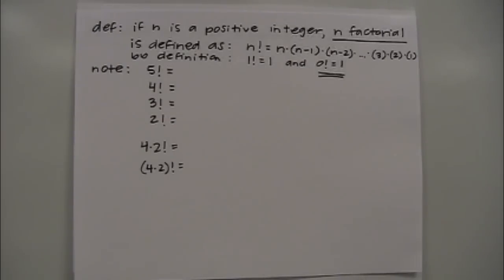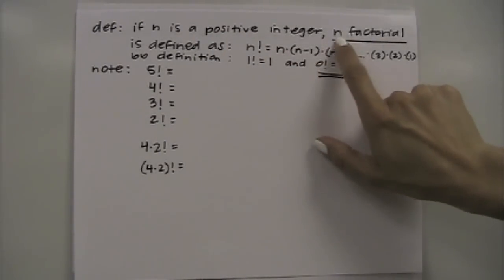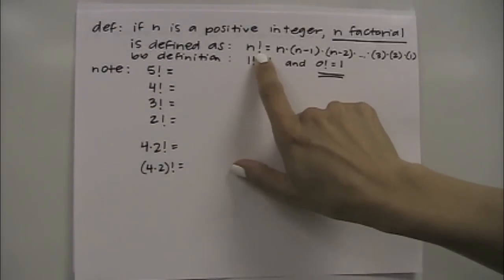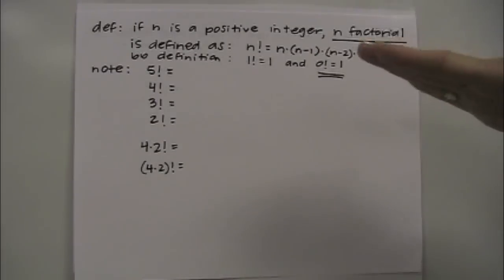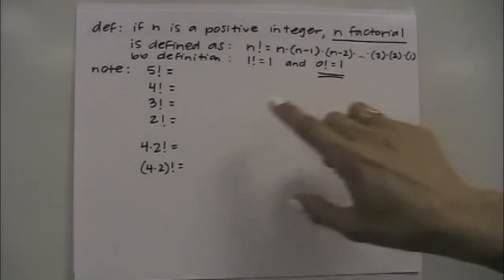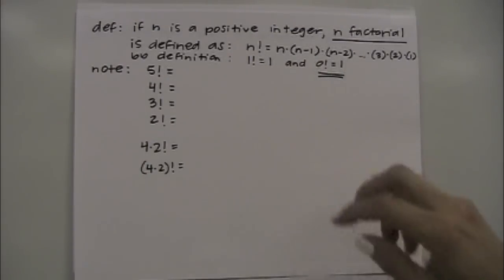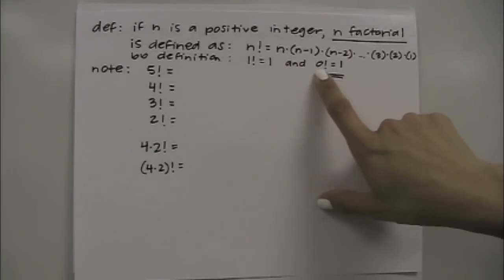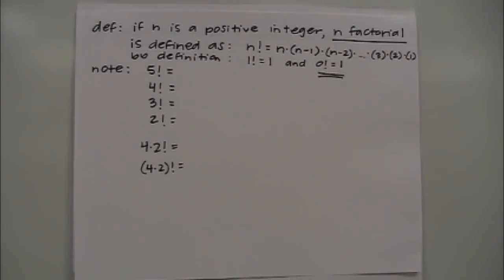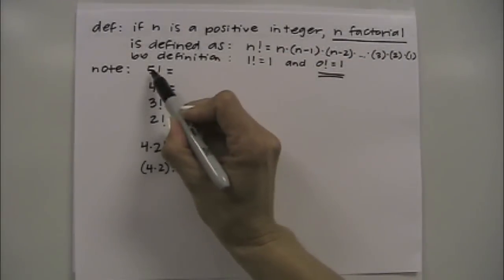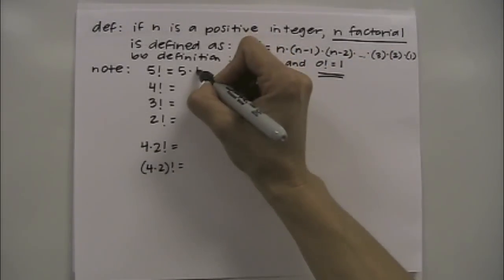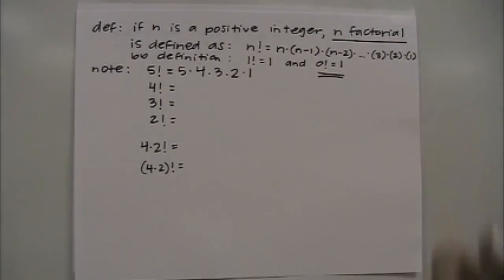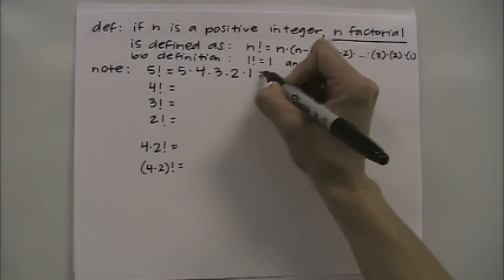Now the definition of factorial. If n is a positive integer, n factorial — written with an exclamation mark — is defined as n times n minus 1 times n minus 2, continuing down to 3 times 2 times 1. By definition, 1 factorial equals 1 and 0 factorial equals 1. Be really aware: 0 factorial does not equal 0. For example, 5 factorial equals 5 times 4 times 3 times 2 times 1, which gives 120. 4 factorial equals 24, 3 factorial equals 6, and 2 factorial equals 2.